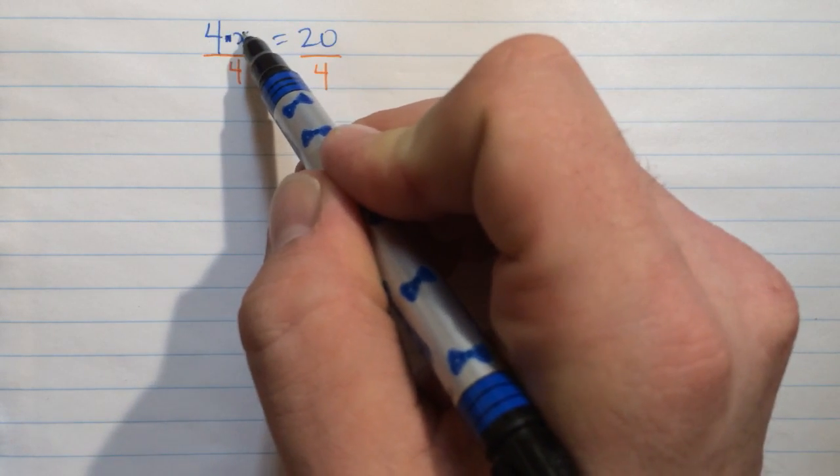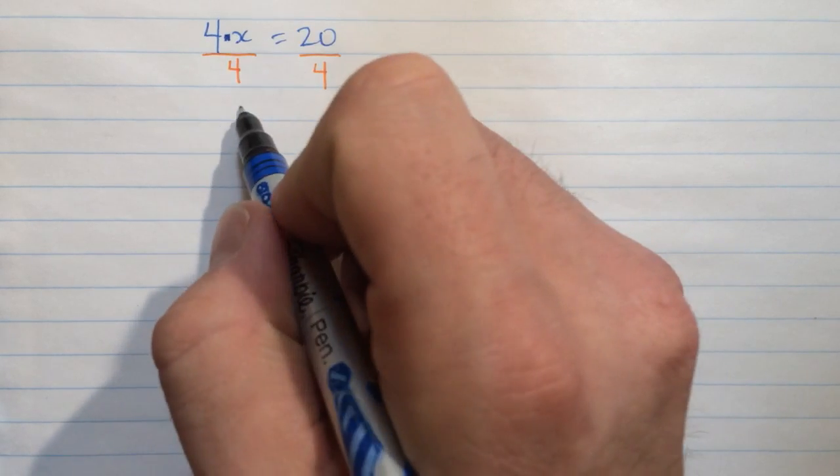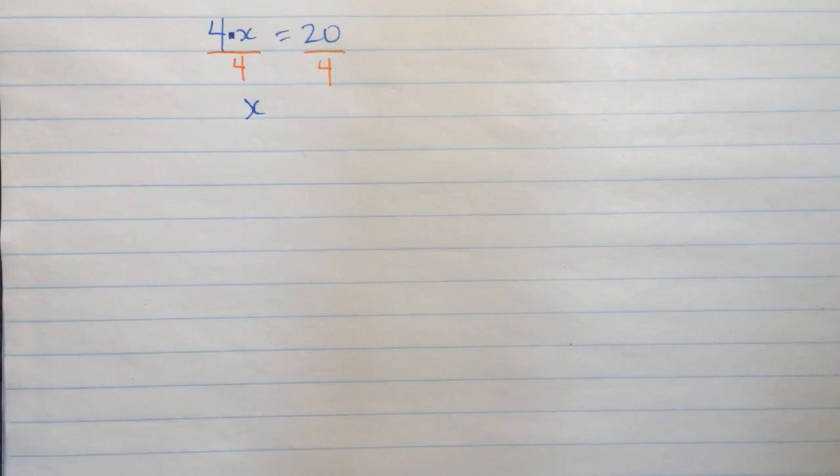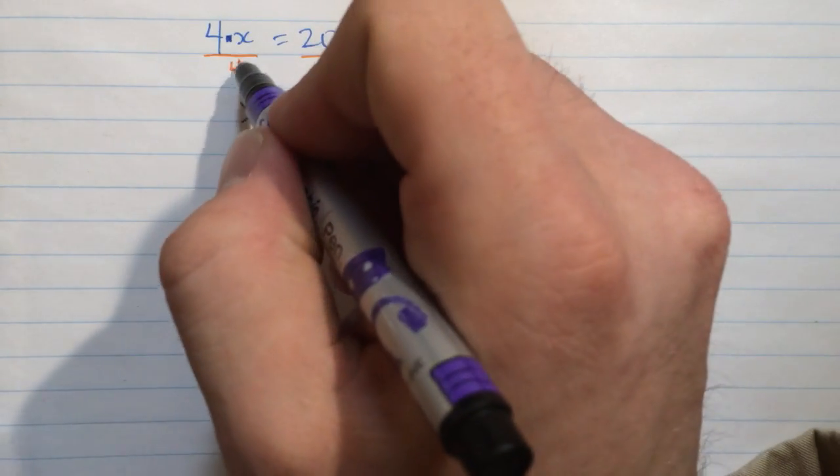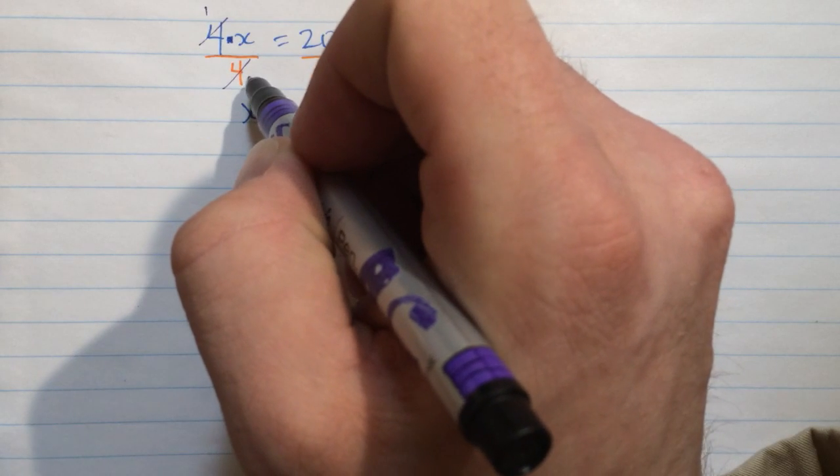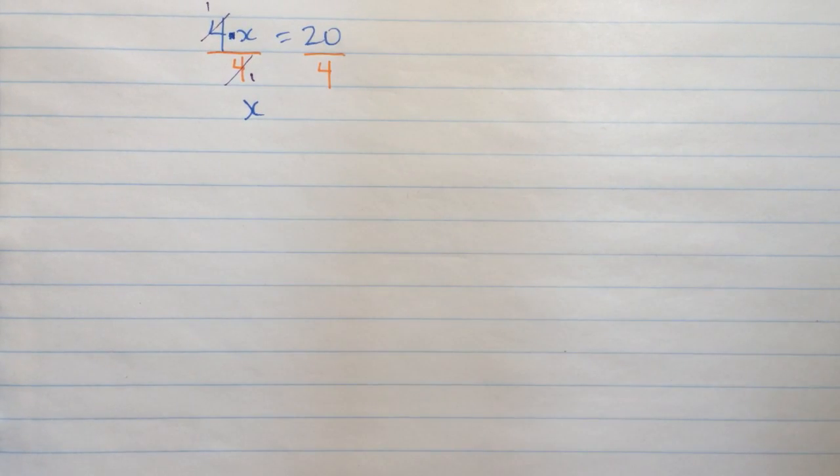And so 4 times x and then divided by 4 will be the same as just x. And some people like to do something like this. They'll call this cancelling or dividing out the 4s. Divide the top by 4 and divide the bottom by 4, and you'll be left with just 1.